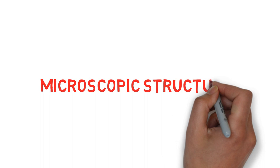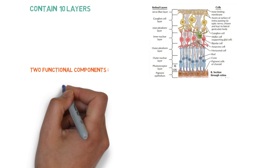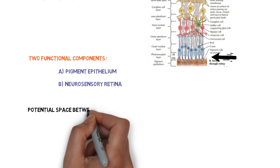Let's talk about the microscopic structures. The retina consists of 10 layers arranged in two distinct functional components: the pigment epithelium and the neurosensory retina, with a potential space between the two called the subretinal space.